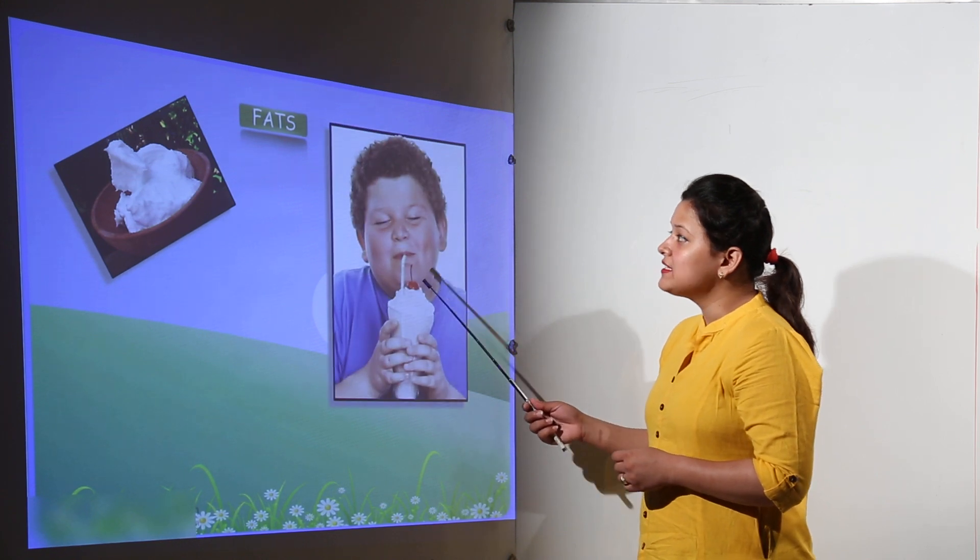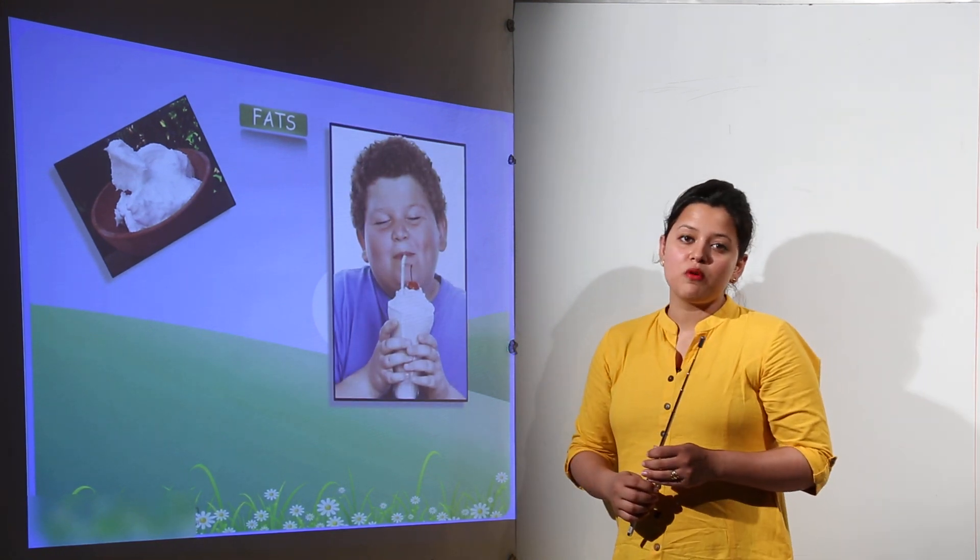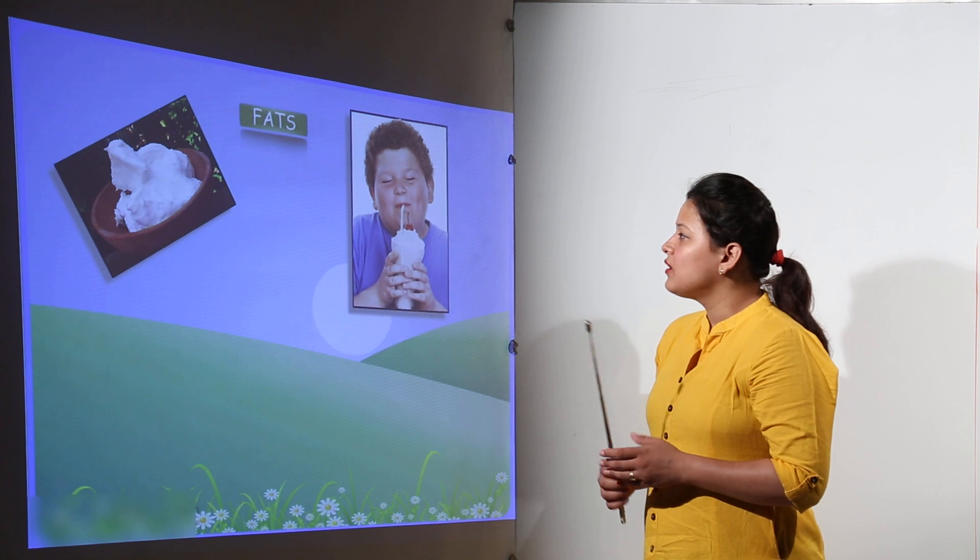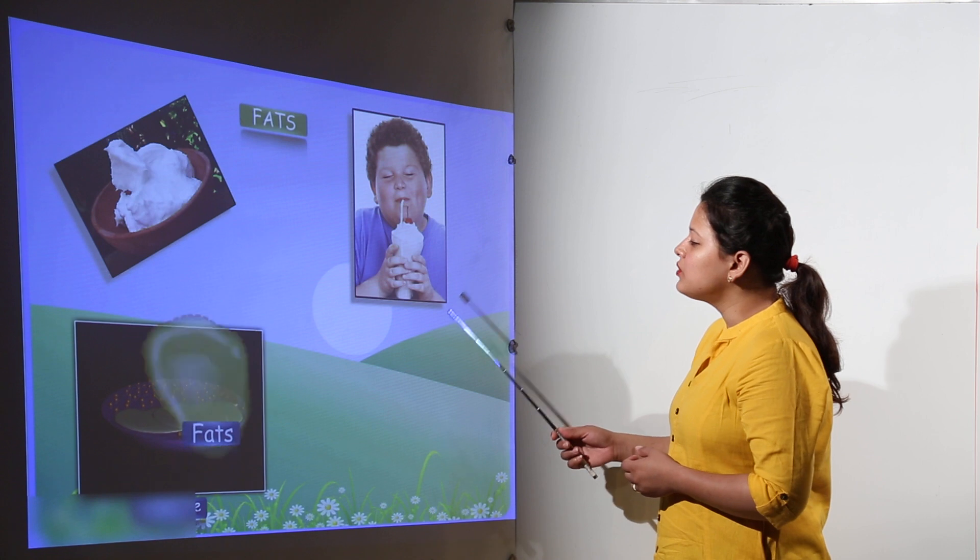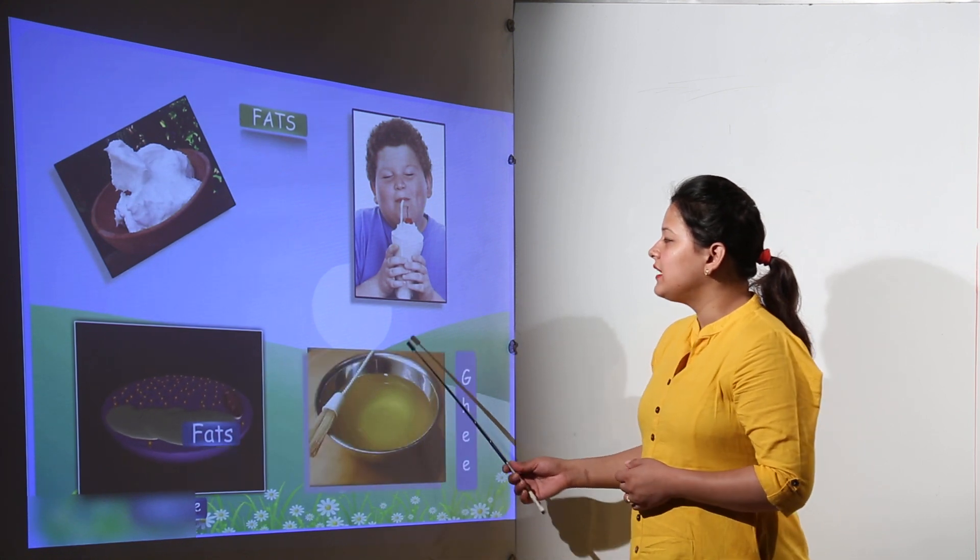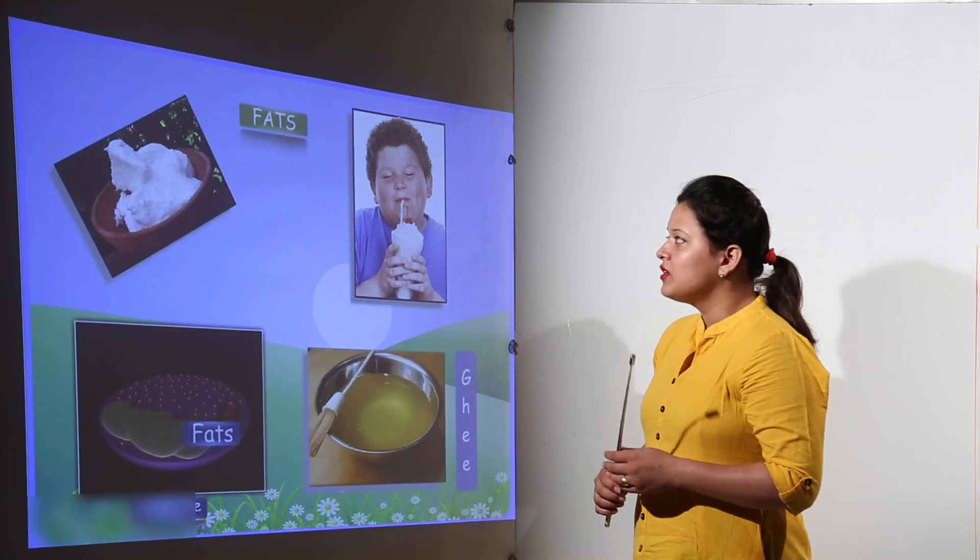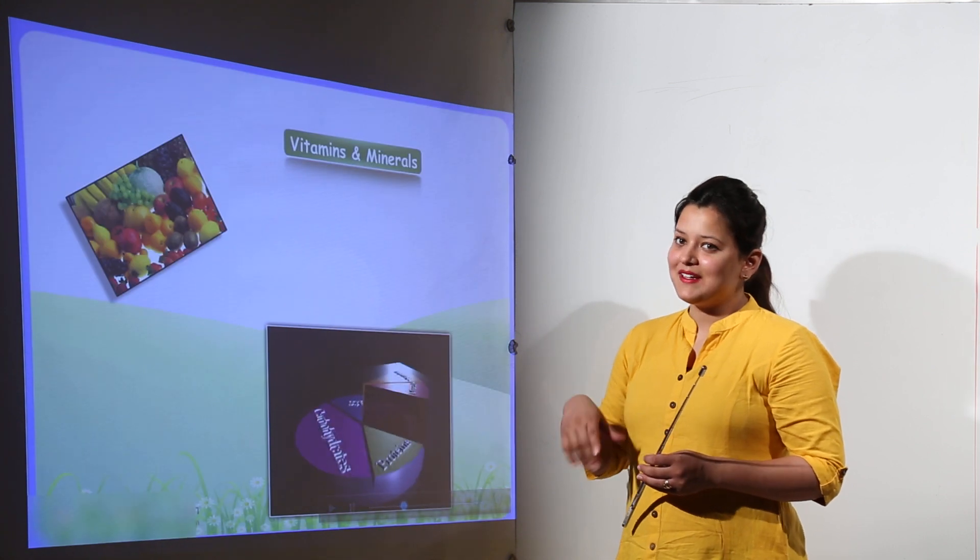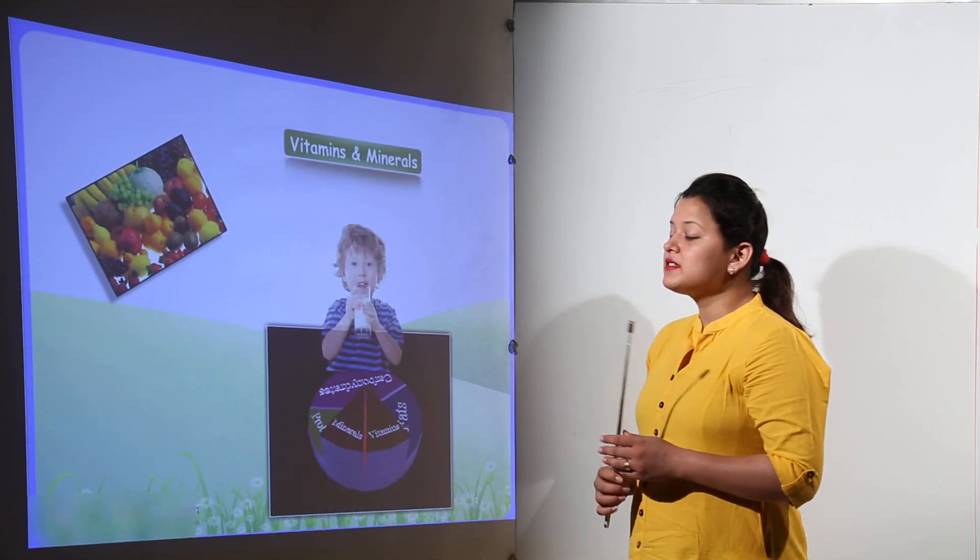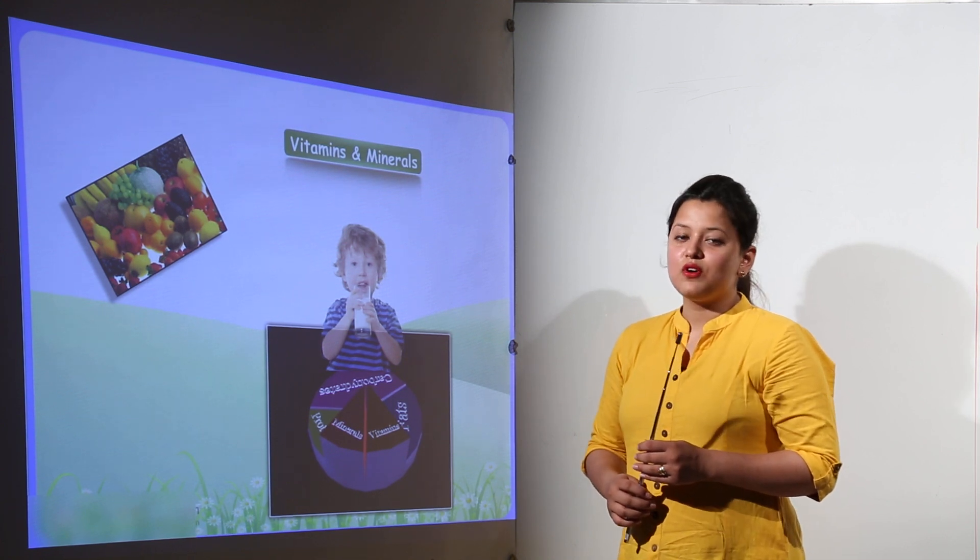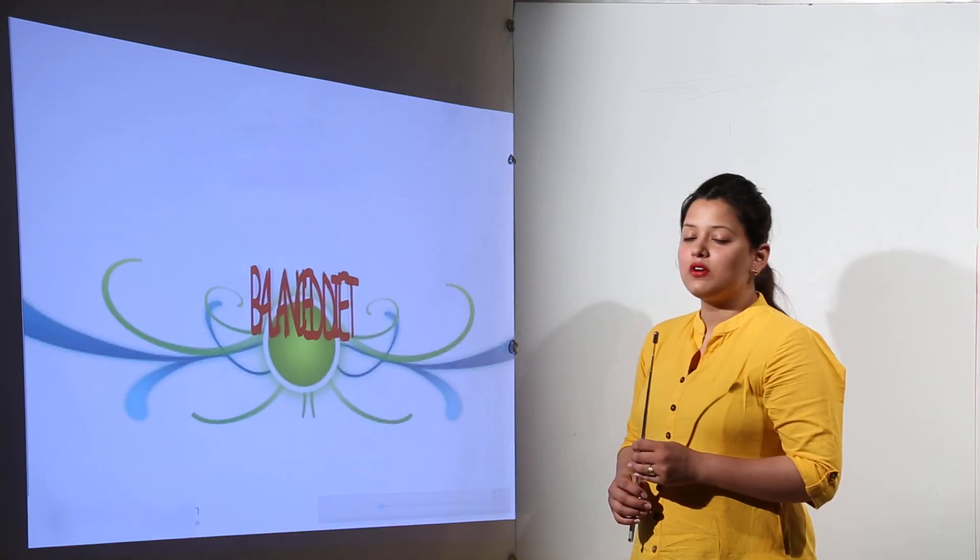Then we have fats which are the stored form of energies. The food that we eat, the energy that is made inside our body is stored in the form of fats like in ghee. So ghee gives us energy but that gets stored in the form of fats. Vitamins and minerals are the accessories that are required for our body.